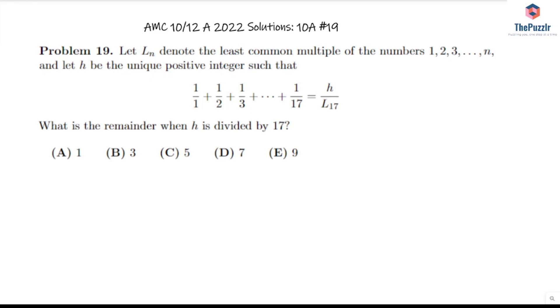So first thing we're going to do, let's get h all the way by itself on this equation. So we're going to have L_17 over 1 plus L_17 over 2 plus L_17 over 3 all the way to L_17 over 16 plus L_17 over 17 is equal to h.